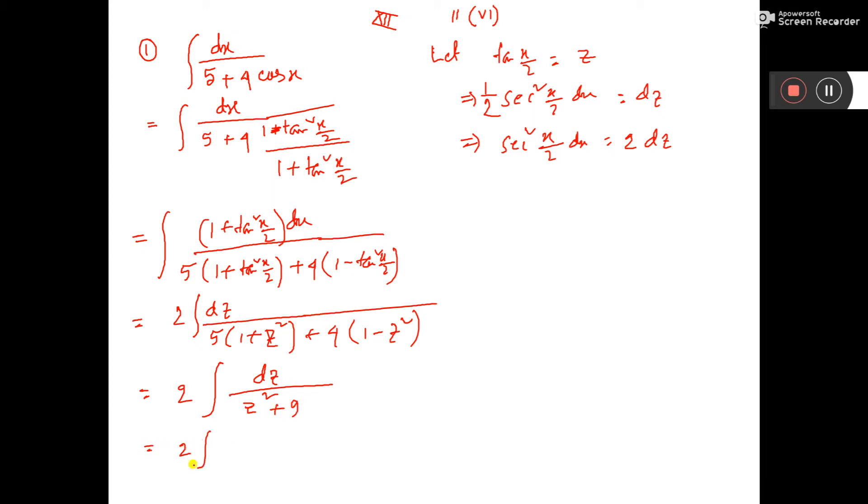So it is 2 into dz by z square plus 3 square, so there is one formula. The formula is 1 by a, a means 3 here, dz by z square plus a square, that is 1 by a tan inverse z by a, a means 3.